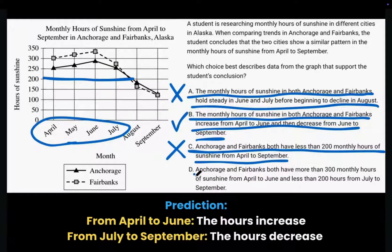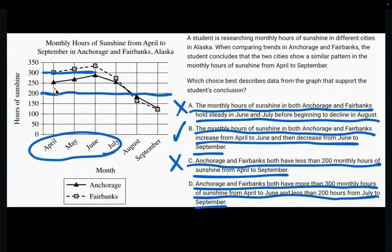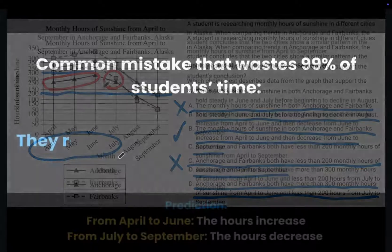Choice D: Anchorage and Fairbanks both have more than 300 monthly hours of sunshine from April to June and less than 200 hours from July to September. This does not match our prediction. Plus, Anchorage has less than 300 hours from April to June, and both cities have more than 200 monthly hours in July. So choice B is correct.